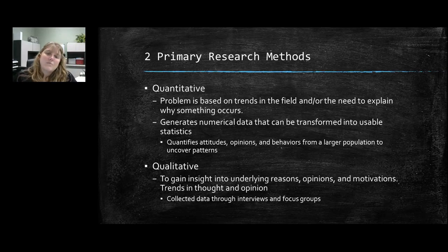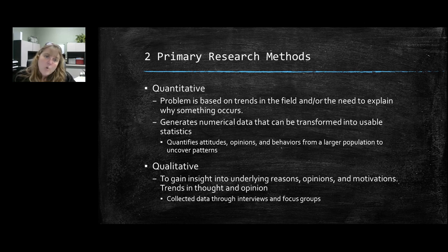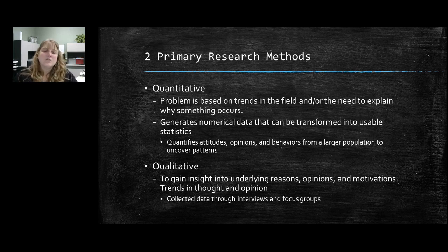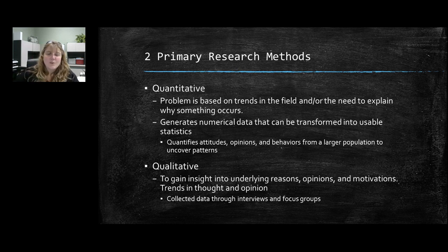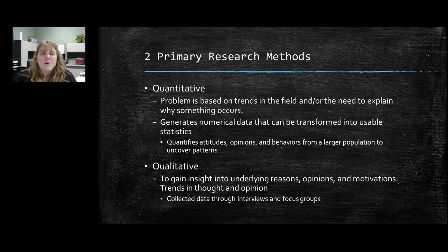There are two primary research methods. One is quantitative and the other is qualitative. Quantitative research is when a problem is based on trends in the field or the need to explain why something occurs, and it typically generates numerical data that can be transformed into usable statistics. It quantifies attitudes, opinions, and behaviors from a larger population to uncover patterns. Qualitative research tries to gain insight into underlying reasons, opinions, and motivations — finding trends in thought and opinion — and it collects data through interviews and focus groups.